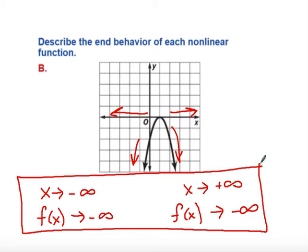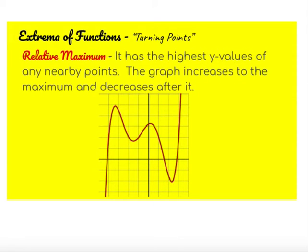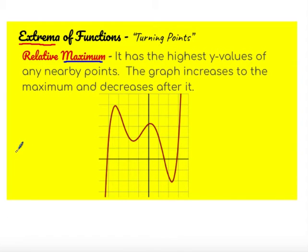Another important part of a function is called the extrema, also known as the turning points of a function. We have two different kinds: maximums and minimums. We're specifically going to talk about relative maximum and minimums today. There are also absolutes, which are the highest peaks in the whole function, but we're just concerned with relative today. A relative maximum is the highest y value of any nearby points — it might not be the highest y value in the entire function, but it's the highest in terms of what is around it.